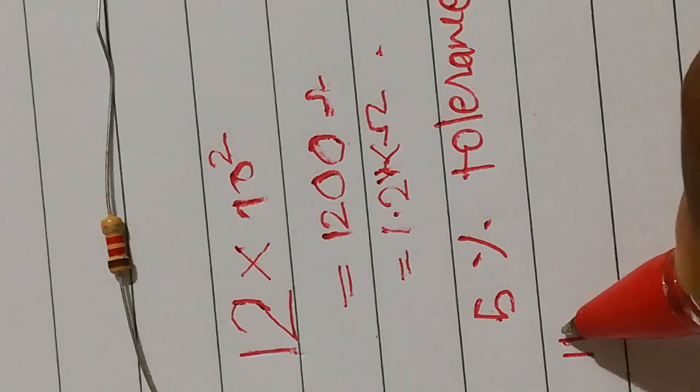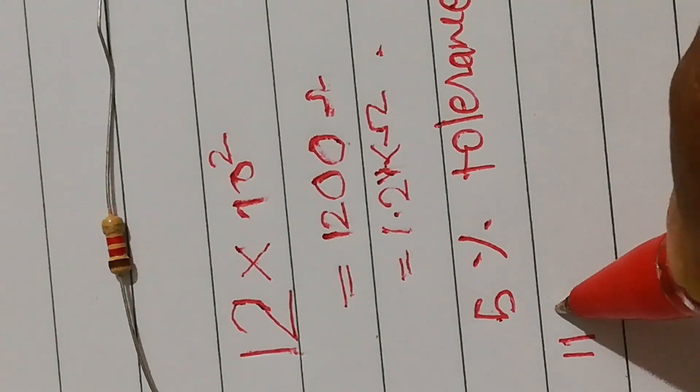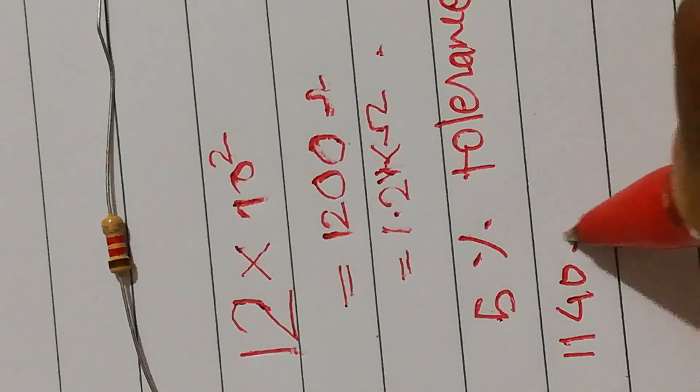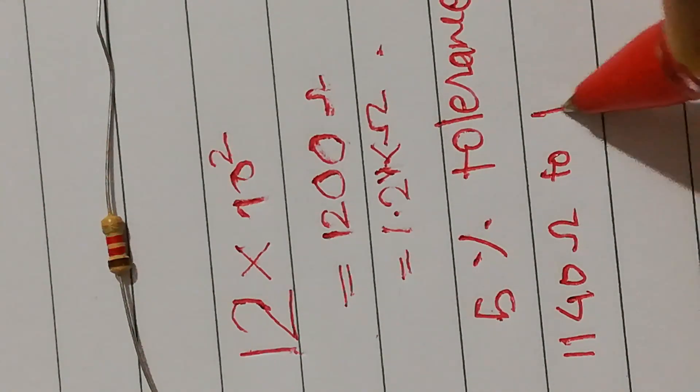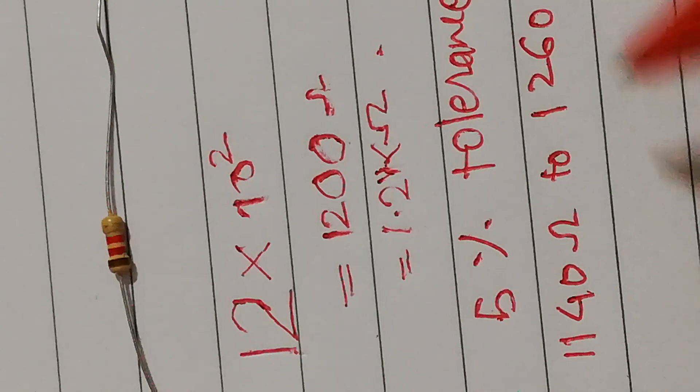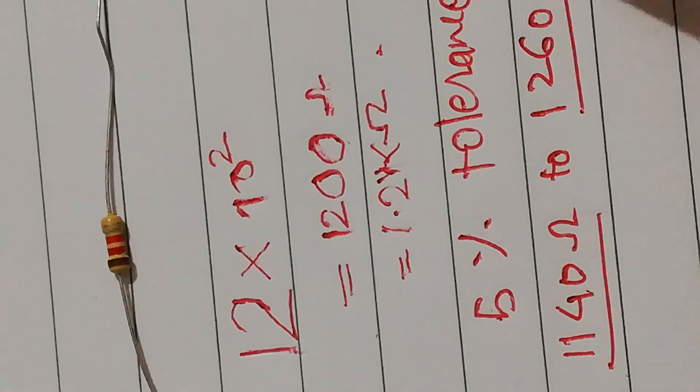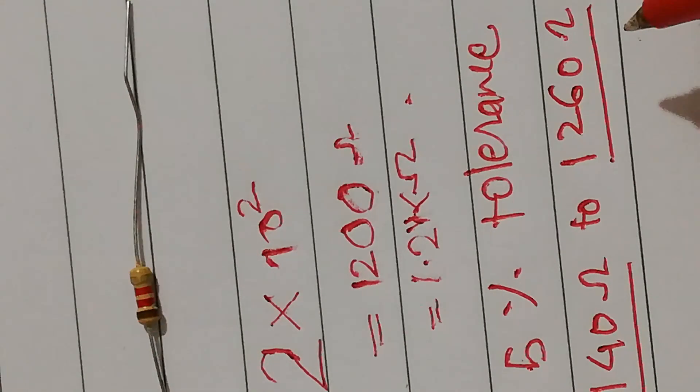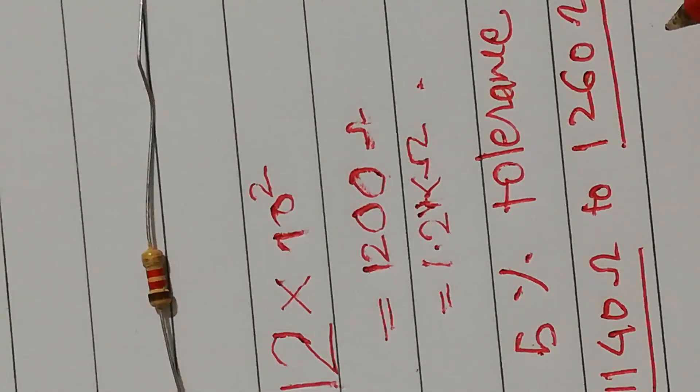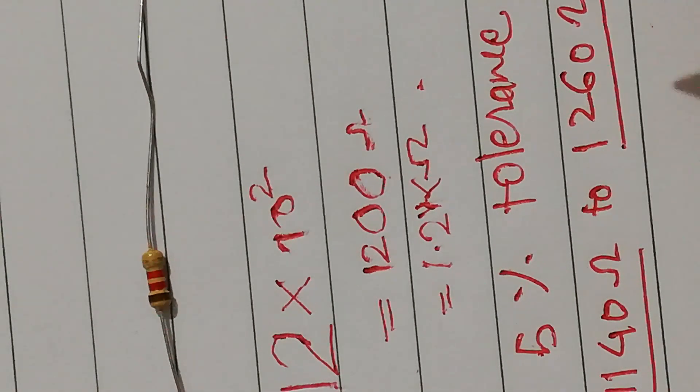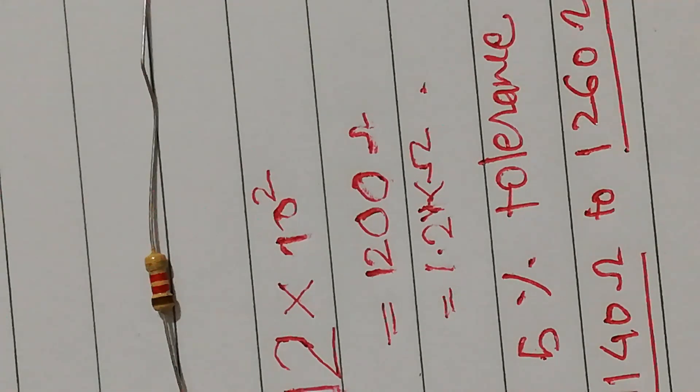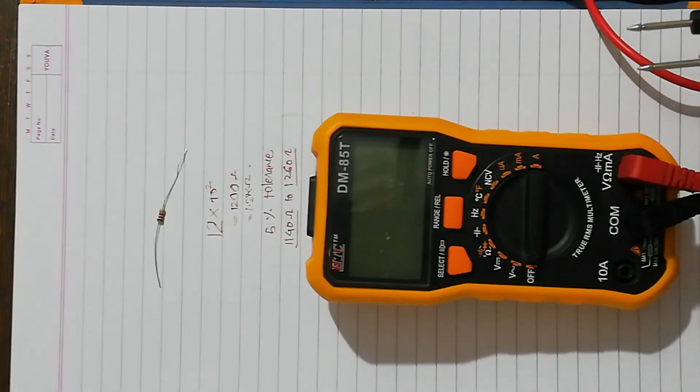So the 5% tolerance of this resistor says that the resistor will have a minimum value of 1140 ohms to 1260 ohms. So minimum it can go to 1140 ohms and maximum it can go to 1260 ohms.